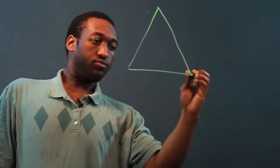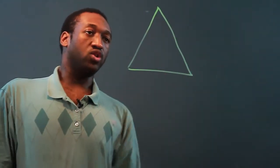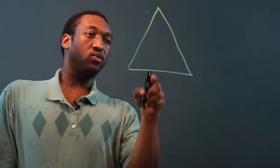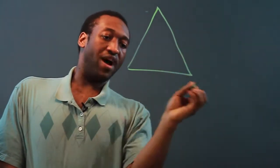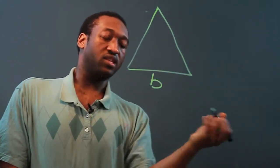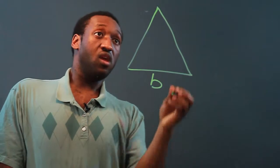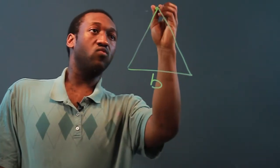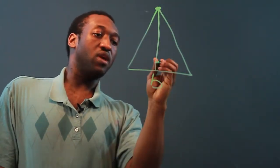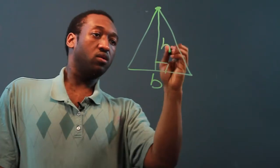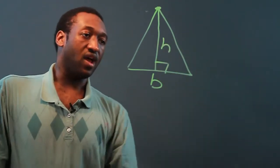So let's first talk about a triangle. A triangle has three sides. Let's call the bottom side the base, and the height will go from the top directly down to the base and be perpendicular. So let's call that the height.